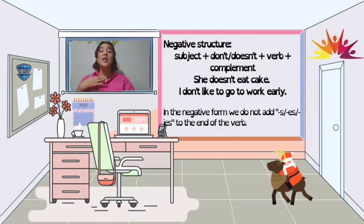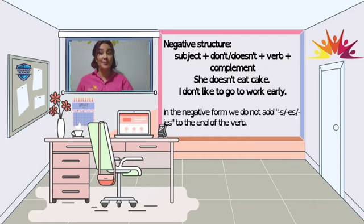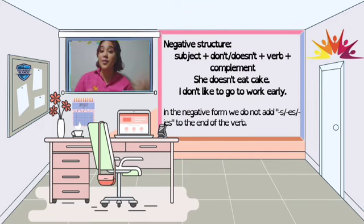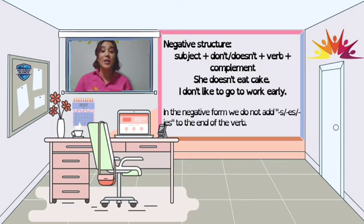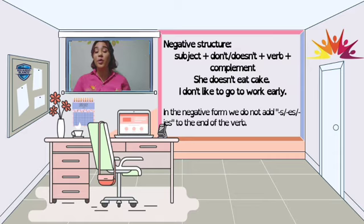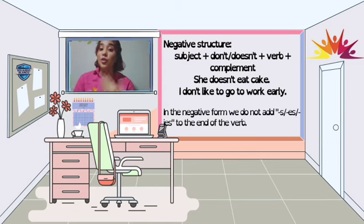Now we're going to learn about the negative structure of the present simple. The negative structure needs to have, first, the subject, followed by the auxiliary — which is 'do' or 'does' depending on the subject — then 'not', then the verb, and then the complement if we want it. Como cualquier oración necesita tener un sujeto, pero en el caso de las oraciones negativas debe tener un auxiliar — do o does — dependiendo del sujeto. Este do o does va seguido de 'not', luego el verbo, y si queremos, un complemento.